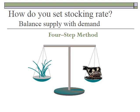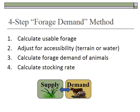When setting a stocking rate, you're basically doing a balancing act between supply — the amount of forage that you can use — and demand — the number of animals you have or want to put on the land. This four-step method was codified by Jerry Holacek in New Mexico, and is described in the class reading. The four steps are: first, calculate your usable forage, the amount of vegetation out on the range that you can use as forage.